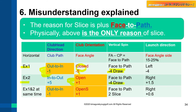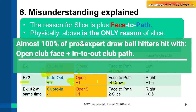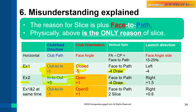Actually, this combination is the case for most professional and expert golfers — draw hitters. An out-to-in swing path and an open face angle are not the direct cause of a slice.